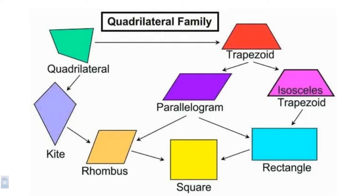What makes a parallelogram different from a trapezoid is that in a parallelogram, opposite sides are parallel. In a trapezoid — looking at the red trapezoid and the magenta isosceles trapezoid — the top and bottom sides are parallel to each other but the left and right sides are not. So a trapezoid is a quadrilateral where one pair of opposite sides is parallel and the other is not.